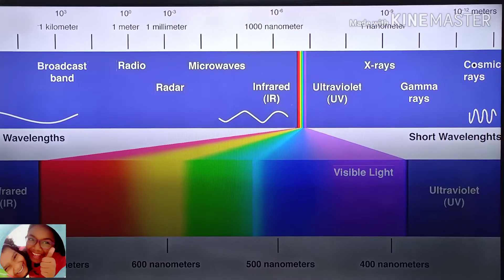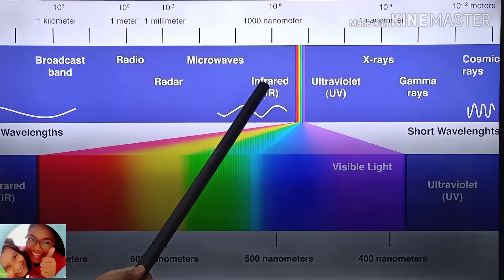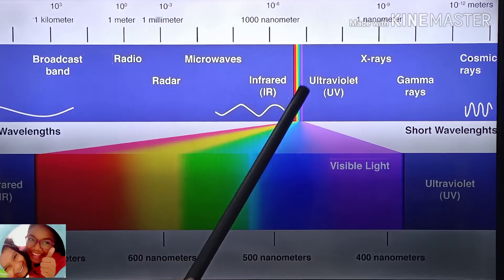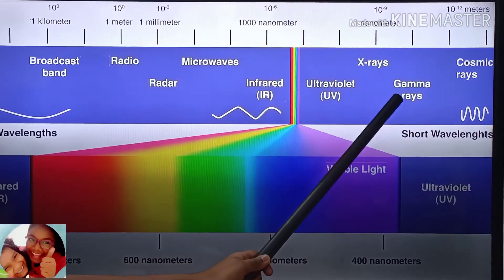The seven types of waves are radio waves, microwaves, infrared waves, visible light, ultraviolet waves, X rays, and gamma rays.